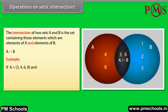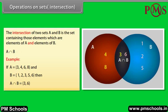Example: if A is equal to {3, 4, 6, 8} and B is equal to {1, 2, 3, 5, 6}, then A intersection B is equal to {3, 6}. Look at this diagram now. This dark portion indicates A intersection B.